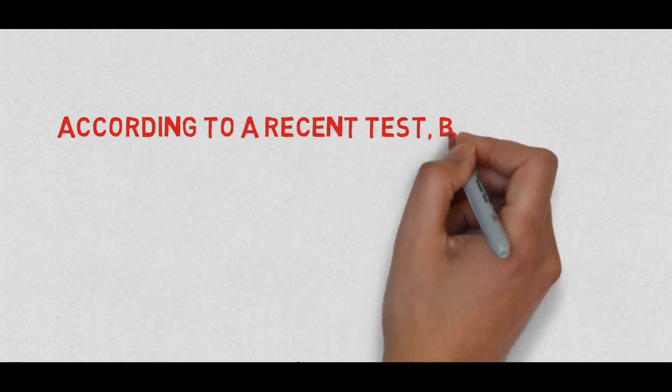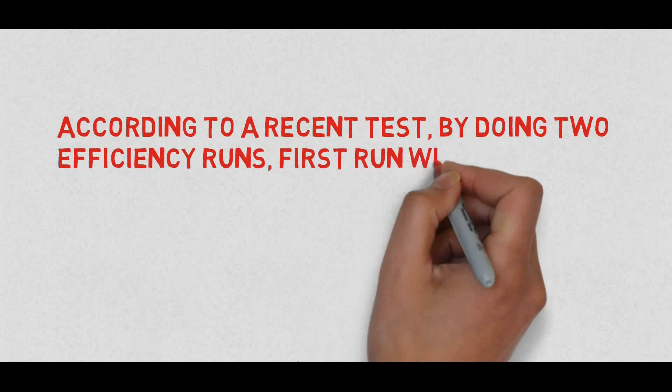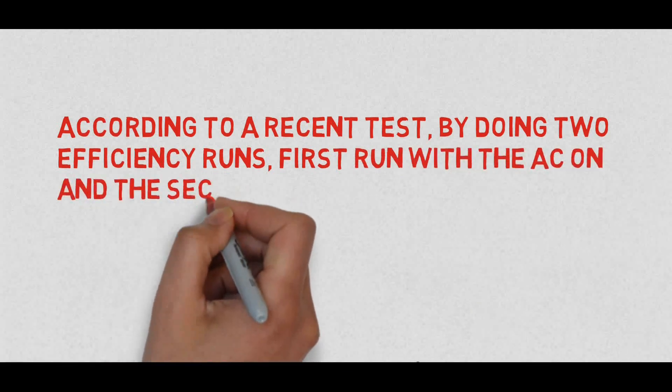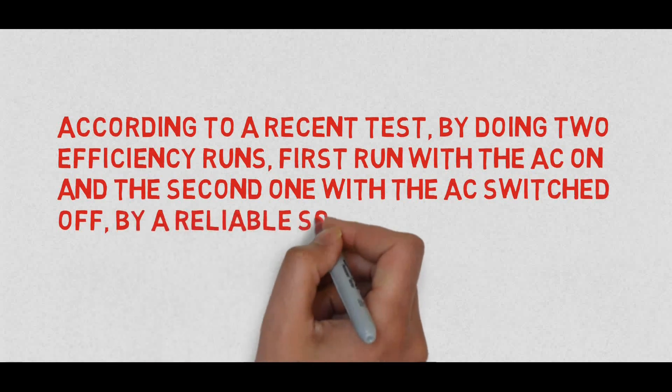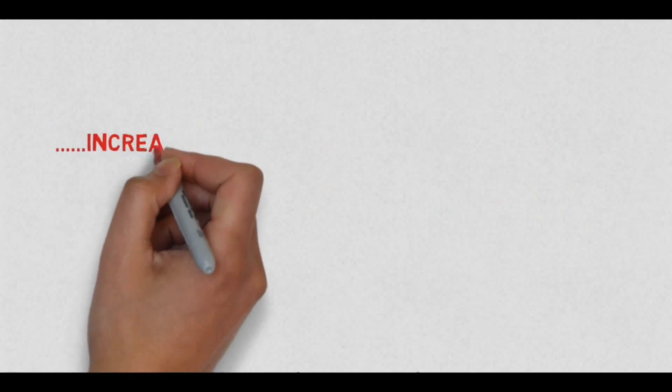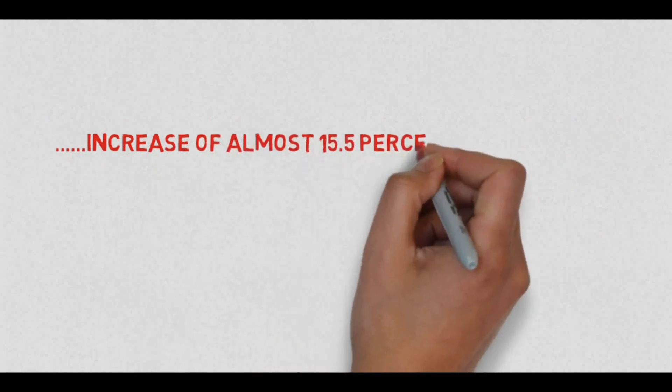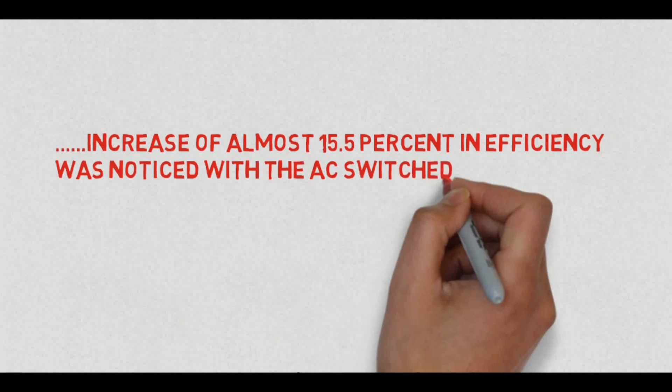According to a recent test, by doing two efficiency runs, first run with the AC on and the second one with the AC switched off by a reliable source, a significant increase of almost 15.5% in efficiency was noticed with the AC switched off.